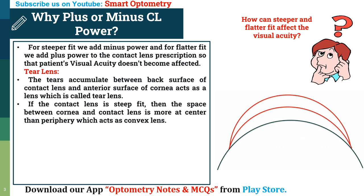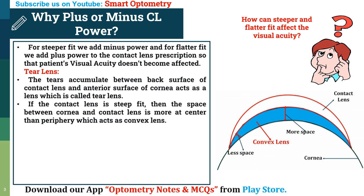This is an example of steep contact lens fitting. This is the cornea, this is the contact lens. Due to the steep fit, the space between the contact lens and cornea is more at the center and less at the periphery, due to which a convex tear lens is formed.